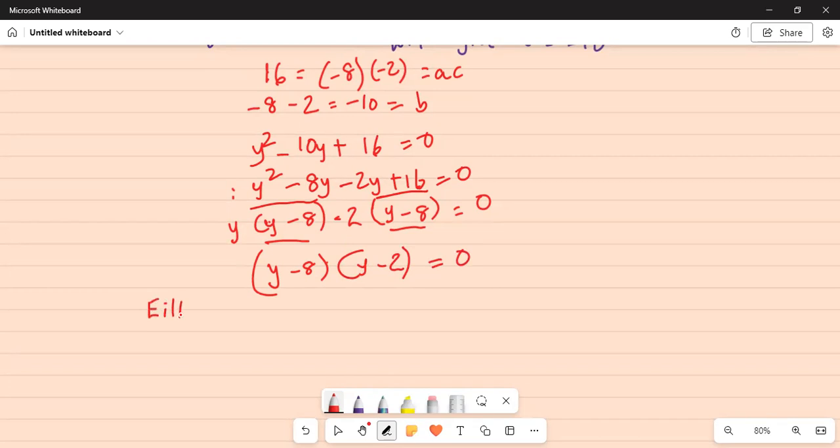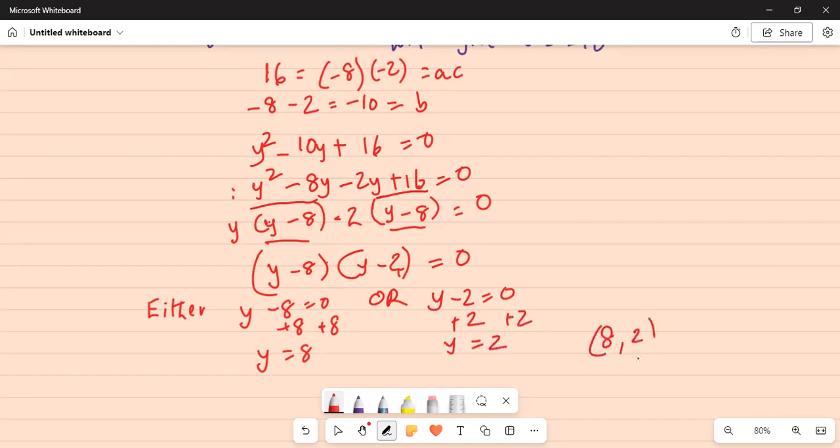So either y minus 8 equal to 0 add 8 on both sides y is equal to 8 or y minus 2 equal to 0 add 2 on both sides y is equal to 2. So what are the two solutions? y equals 8 comma 2. So I will stop here today but before I stop I want to give you an important hint or tip.